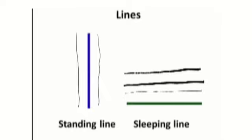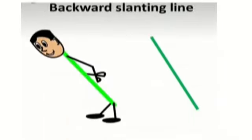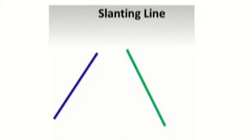Now children, see the next pattern. Doesn't it look like the line is bending forward? So let us call it a forward slanting line. Now see the next pattern. So children, this is also a slanting line, but it is slanting in the backward direction. So let us call it a backward slanting line.